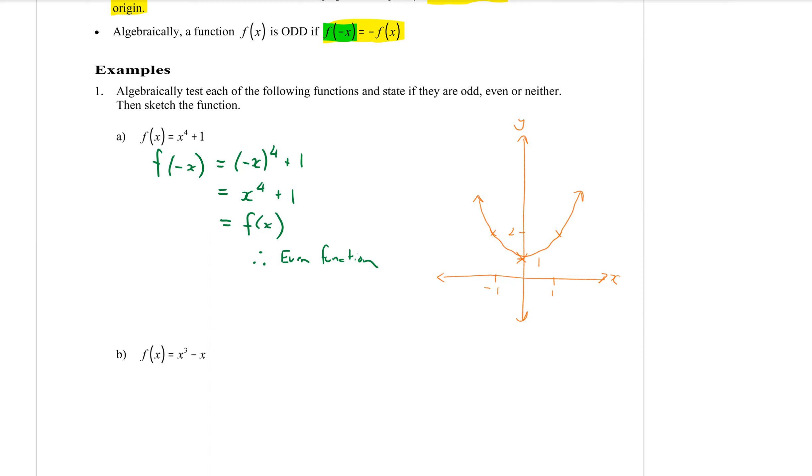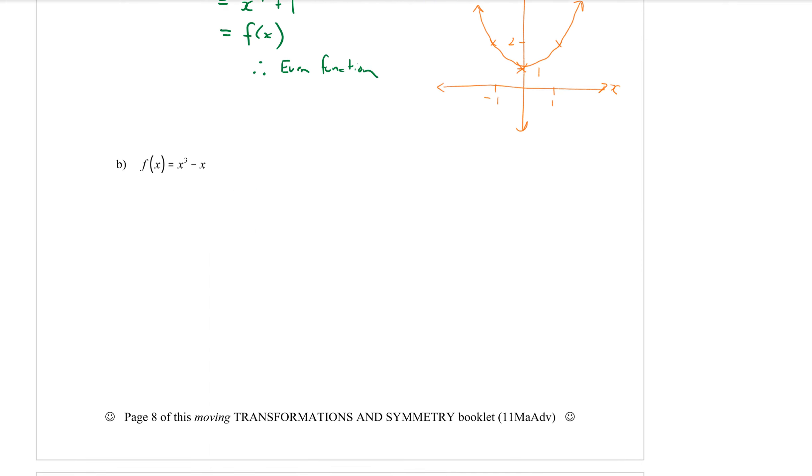Let's try question b. So we always start by subbing in minus x into our function everywhere where there's an x. So x cubed is going to become minus x cubed and minus x is going to be minus minus and then minus x. I always put my negative x in brackets so that I don't make any mistakes with the minus signs. Then negative x to an odd power means that that would stay negative x cubed.